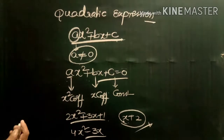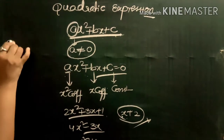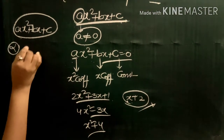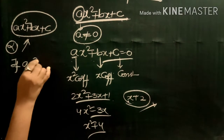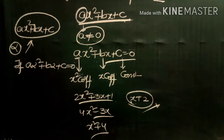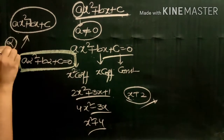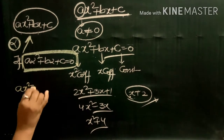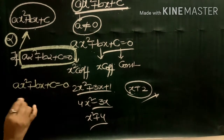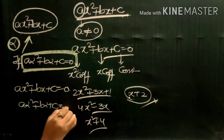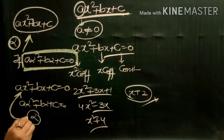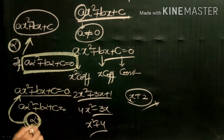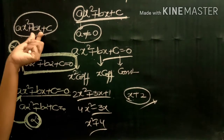The next concept is the zero of the polynomial. For the quadratic expression ax² + bx + c, the number alpha is said to be the zero of the quadratic expression if a·α² + b·α + c = 0. And for the quadratic equation ax² + bx + c = 0, if a·α² + b·α + c = 0, then alpha is said to be the root of the quadratic equation.